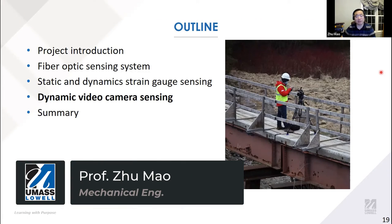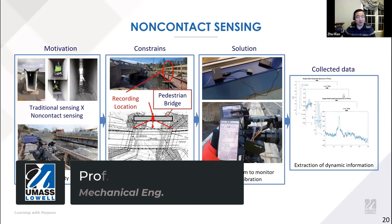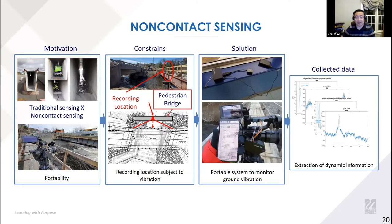I will now present our work on structural dynamics extraction using video cameras. The primary advantage of non-contact sensing is that it requires no sensor installation preparation and provides a portable, low-cost solution for quick bridge inspection with full-field information. A pedestrian bridge near the Grist Mill Bridge offered a good field of view, but the pedestrian bridge itself could introduce ground motion noise. Therefore, we set up a portable Raspberry Pi system to measure ground motion simultaneously while collecting vibration data from the bridge, allowing us to quantify and compensate camera measurement noise.